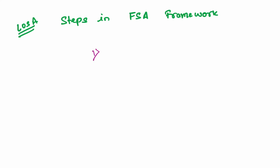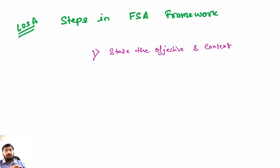The first step is to state the objective and context. Say you want to buy a new phone — you don't just walk into a shop and grab the first one you see. You first ask yourself: what is my budget? Do I want it for gaming or photography? How soon do I need it? Similarly, when you are going to do an analysis, you have to define your objective and context. In finance, before analyzing any particular company, you need to set your objective clearly.